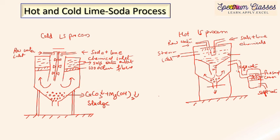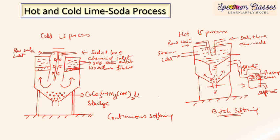When the hot lime soda process uses a separate external filtration unit, it is termed the batch softening method. When the filtration assembly is incorporated within the same unit, it is called continuous softening. In batch softening, the separate filtration unit processes water independently, while in continuous softening, filtration happens inline within the same assembly.